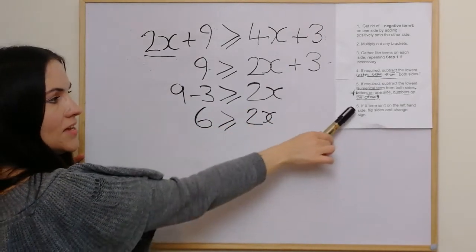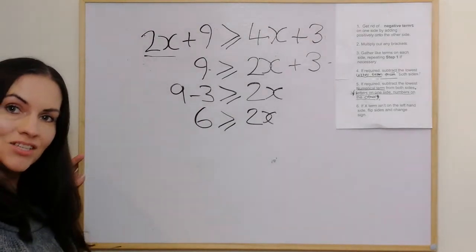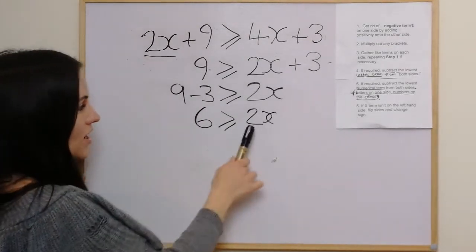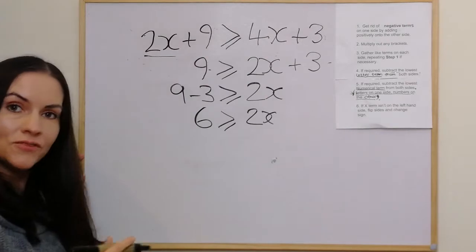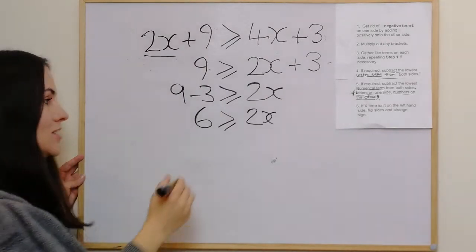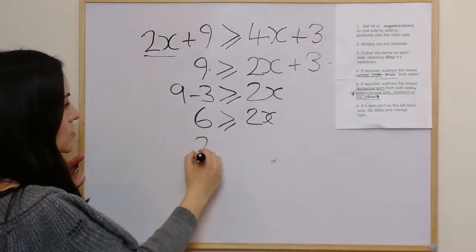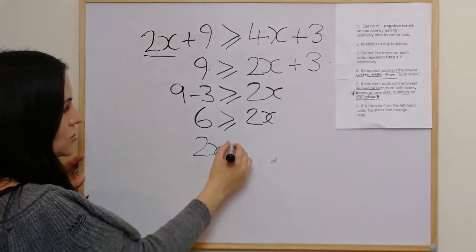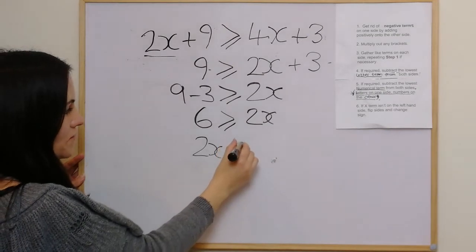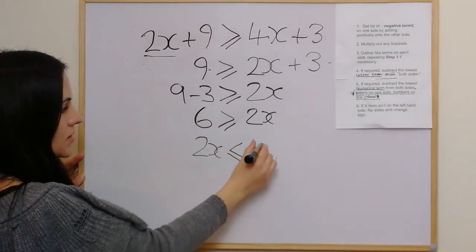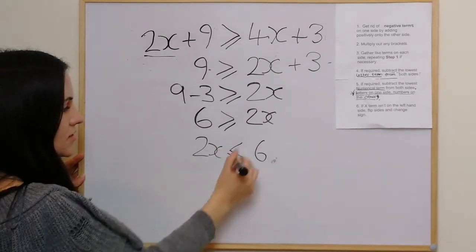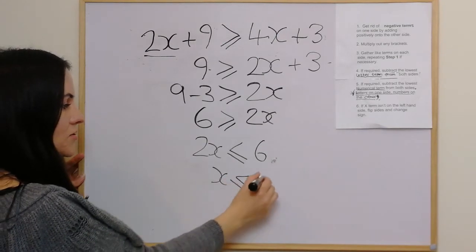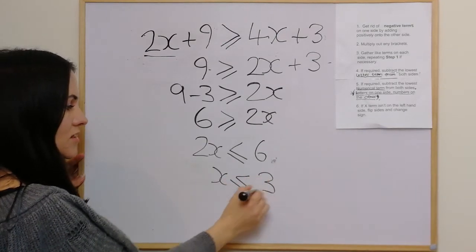Because the x term isn't on the left hand side, we flip the sides and flip the sign. So it becomes 2x is less than or equal to 6. Dividing both sides by 2 gives x is less than or equal to 3.